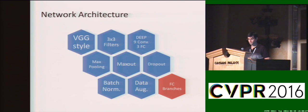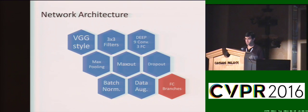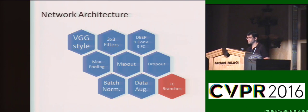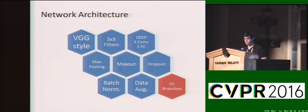A little about the network architecture — most of it is pretty straightforward. We use a VGG-style network, so this means small 3x3 filters, 12 layers total: 9 convolutional and 3 fully connected. We use max pooling, maxout, dropout, batch normalization, and data augmentation. What makes our network structure a little unique is our usage of fully connected branches.